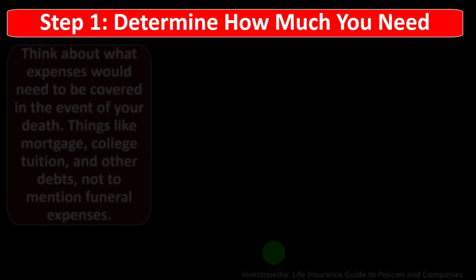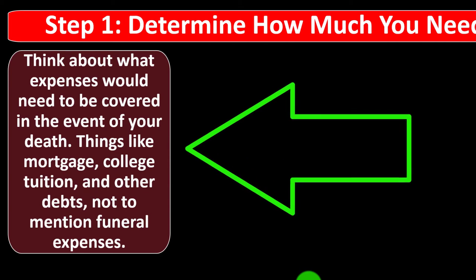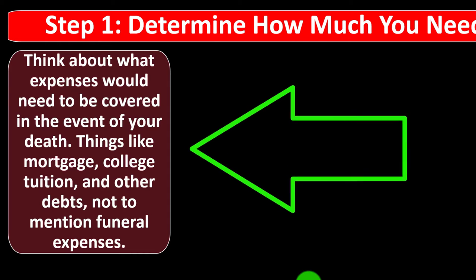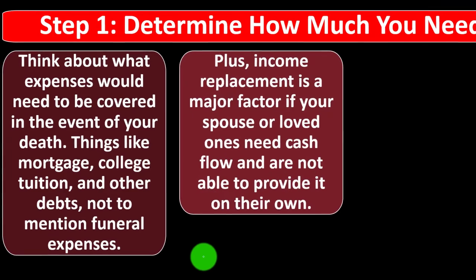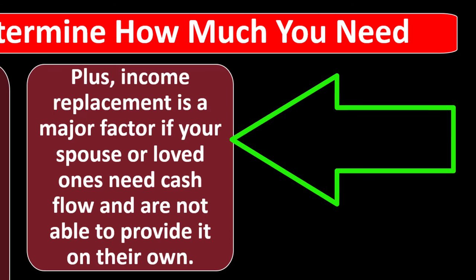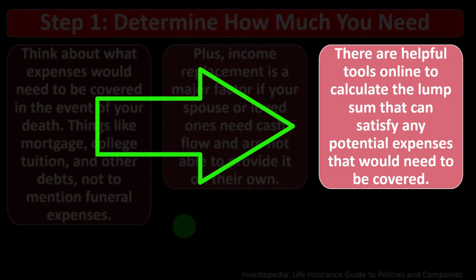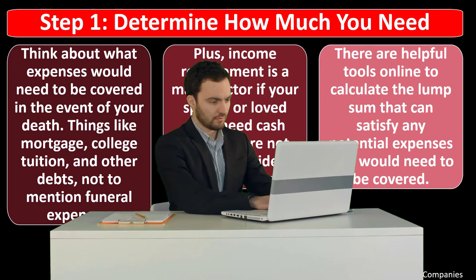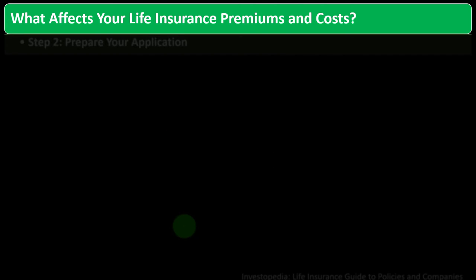Step one: determine how much you need. Think about what expenses would need to be covered in the event of your death — things like mortgage, college tuition, and other debts, not to mention funeral expenses. Income replacement is a major factor if your spouse or loved ones need cash flow and are not able to provide it on their own. There are helpful tools online to calculate the lump sum that can satisfy any potential expenses that would need to be covered.